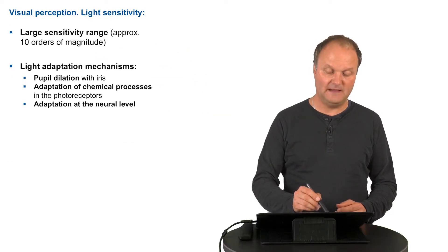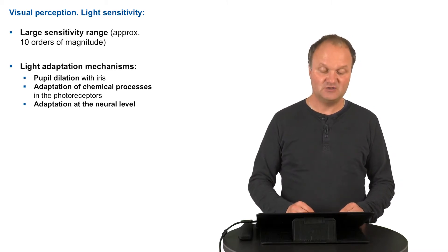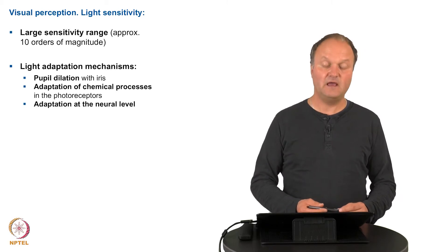Talking about the light sensitivity, there is a relatively large range of light where we are sensitive to. Approximately ten orders of magnitude can be covered by the human visual system. And in order to cope with such a wide range of different light intensities, there are different adaptation mechanisms.